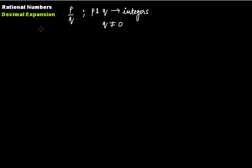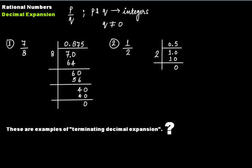The main point we have to discuss in this tutorial is the decimal expansion of rational numbers. Take the rational number seven by eight. If you divide seven by eight, your remainder finally becomes zero, and the quotient is 0.875. Similarly, for one by two, the remainder again becomes zero and the quotient is 0.5. Both terminate, so we say these are examples of terminating decimal expansion.